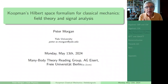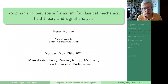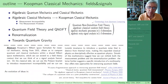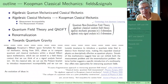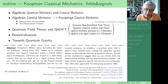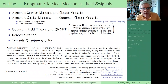This is a re-enactment of a talk that I gave last week because someone was unable to be there. I'm going to talk about Koopman classical mechanics, and particularly about field theory and signal analysis. I'll begin by discussing algebraic quantum mechanics and classical mechanics, and how that relates to Koopman's Hilbert Space Formalism for classical mechanics.